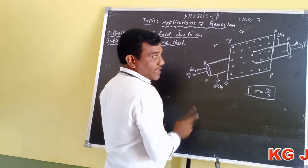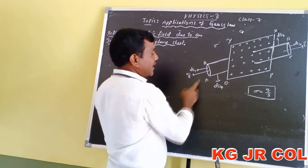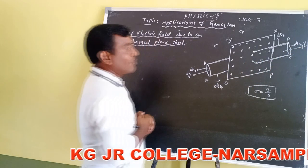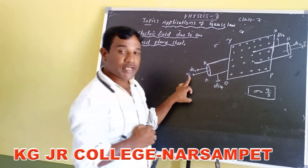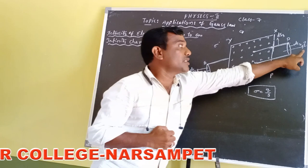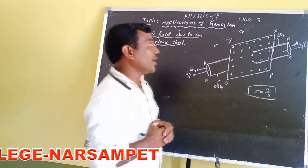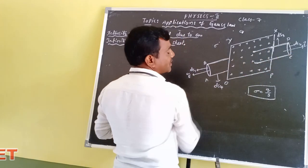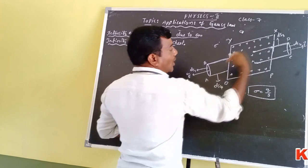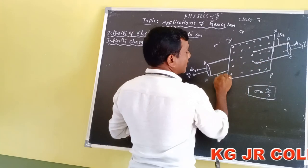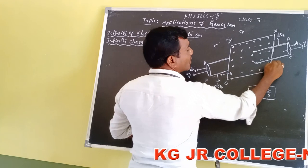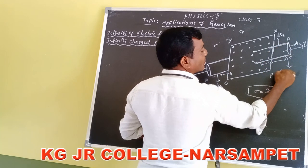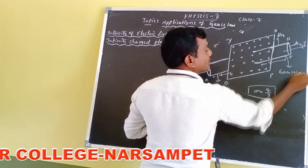The intensity of electric field due to the plane sheet acts in direction E on both sides. For determination of the electric field intensity E, we construct a Gaussian surface inside and outside the plane sheet. The inside length is X and the outside is also X — this is our Gaussian surface.